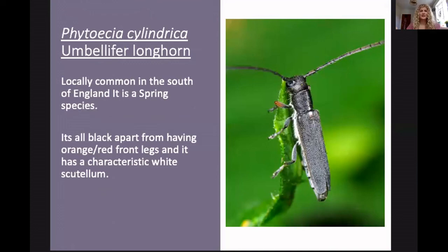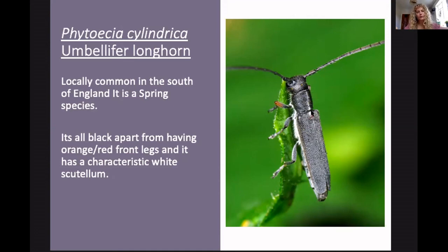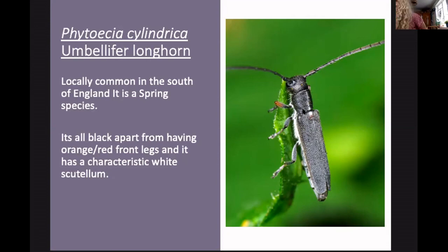Phytosia cylindrica, the umbellifer Longhorn, is one of my favourites — so cute, tiny and very slender, covered in fine pubescence. Key characters are the orange front legs and a white scutellum. Those are the two key characters for this species.